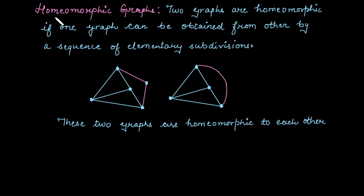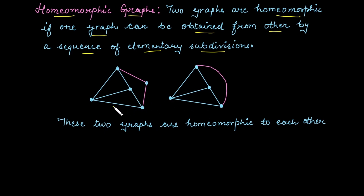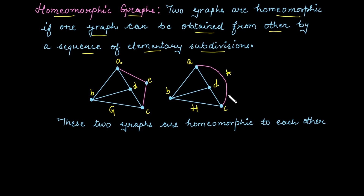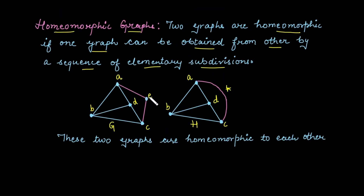Moving further to homeomorphic graphs: two graphs are called homeomorphic if one graph can be obtained from the other with the help of a sequence of elementary subdivisions. To check whether two graphs are homeomorphic, observe whether you can obtain graph G from H or H from G using elementary subdivisions. Label the vertices — suppose A, B, C, D in one graph and A, B, C, D, E in the other. You can take a new vertex E and convert a single edge into two parts: A to E and E to C.